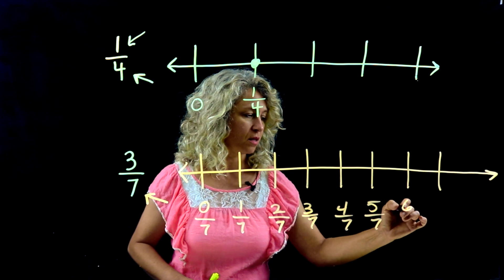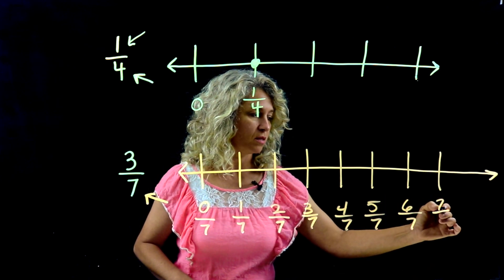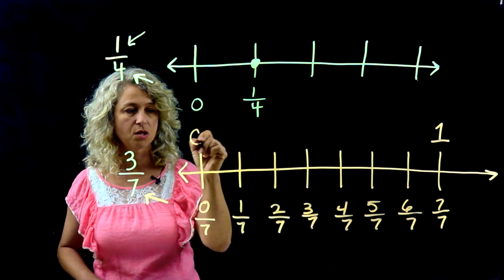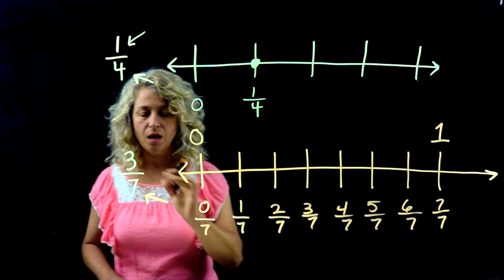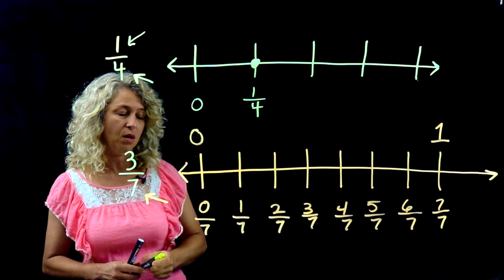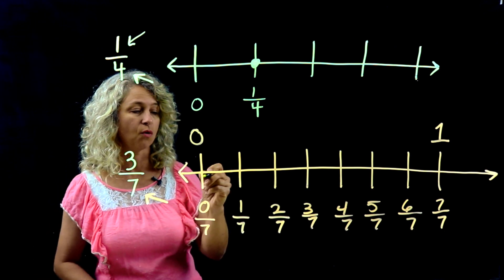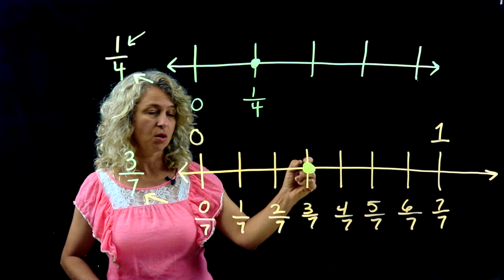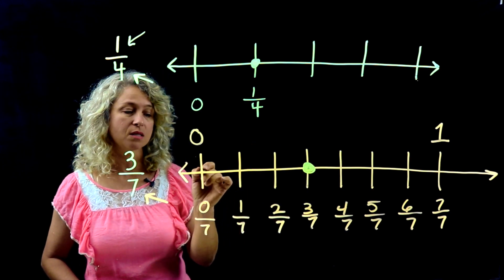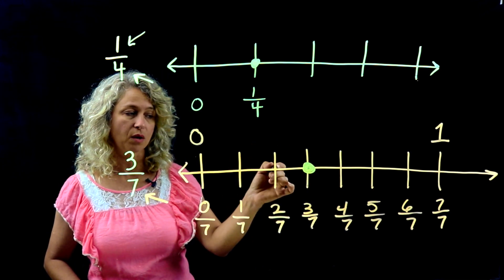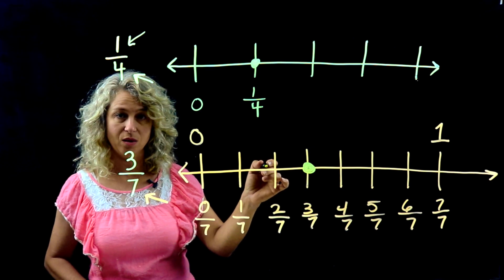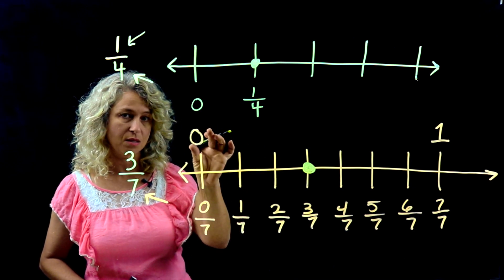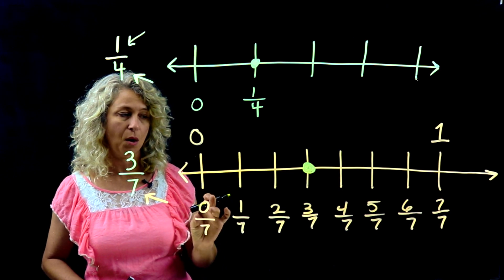Continue labeling: six sevenths, seven sevenths — which means the same thing as the whole number one. So here's zero and here is one. Placing three sevenths, you space over: one, two, three. The most common mistake is to count this tick mark as one, two, three and place the point incorrectly. Always use the first tick mark as zero.